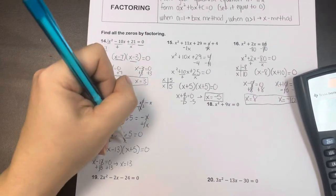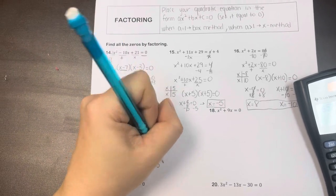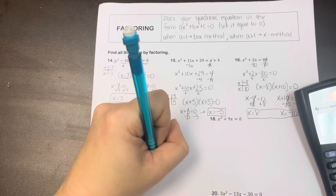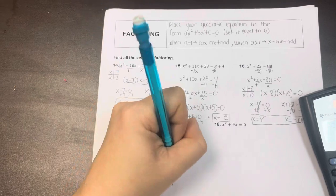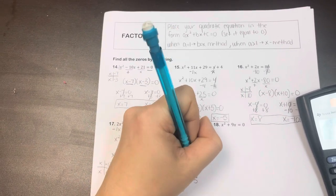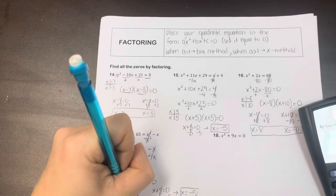And then I could take the x plus 5 and set it equal to 0, and subtract 5 from both sides to get x by itself, and I get x is equal to negative 5. So these are your two answers for that.